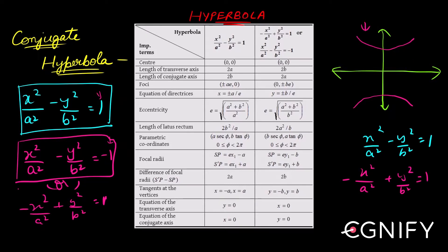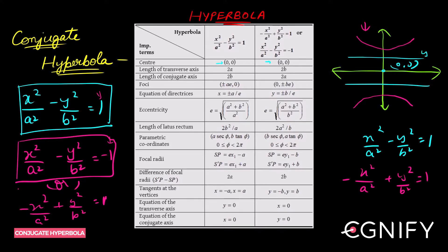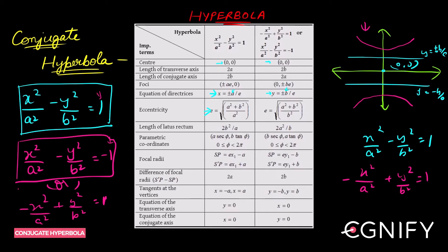The center remains the same — zero, zero — for both the hyperbola and its conjugate. However, the directrices will change. For the original hyperbola it's x = ±a/e, but for the conjugate it's y = ±b/e. The eccentricity for the original hyperbola is e = √(1 + b²/a²), and for the conjugate it's e = √(1 + a²/b²).